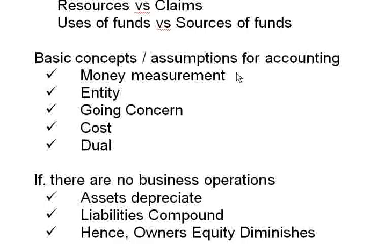Fourth is the cost concept — the value of the CDs shown as five thousand is the cost incurred by the company; the actual market value might be more or less, but the company records it at cost. Finally, there is the dual concept — every entry in the balance sheet has a balancing dual entry. Entries come in pairs, so it is not that only one term changes without a compensating change elsewhere. That is why it is called a balance sheet — assets and liabilities must always be balanced.